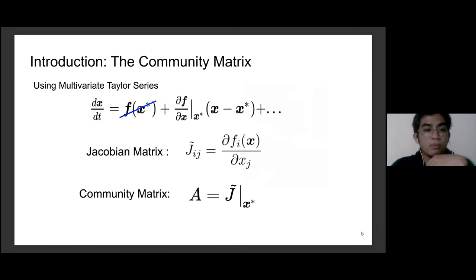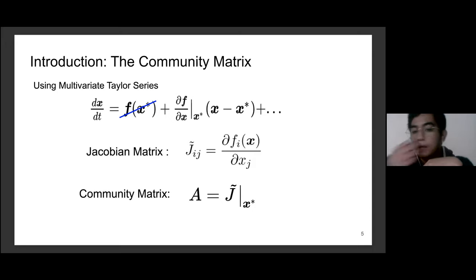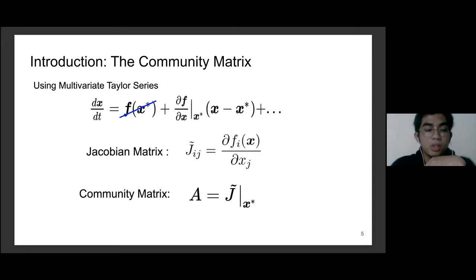If we compile all the nonlinear differential equations for all species and perform a multivariate Taylor series, we find the leading term which is a partial differentiation of all population species. From this we obtain the Jacobian matrix, essential to linear stability analysis. The Jacobian includes the change in population of species i with respect to its interaction with species j. Plugging in equilibrium points gives us the community matrix, which contains only constants representing the interaction strengths between species.